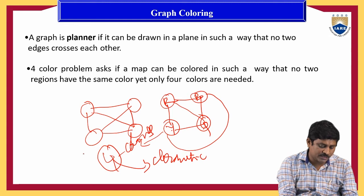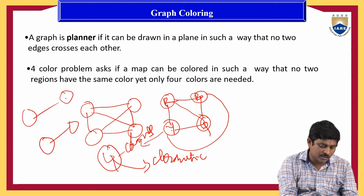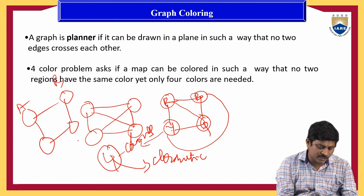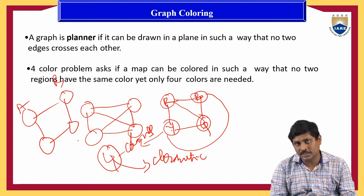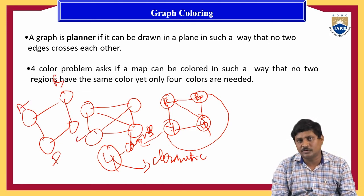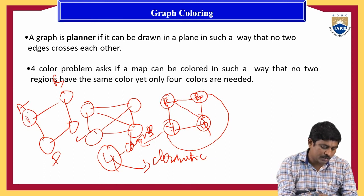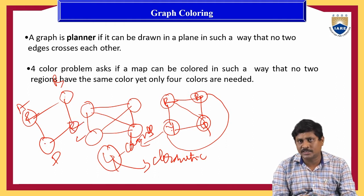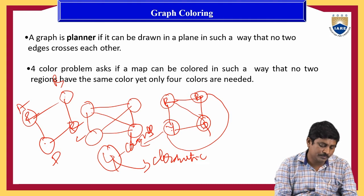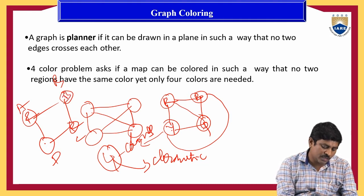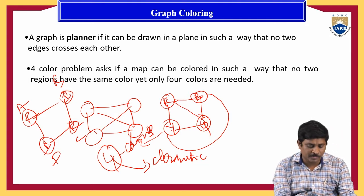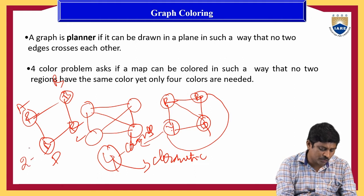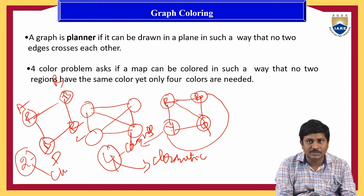Now consider a graph with vertices A, B, C, D. A is not adjacent to C, and B is not adjacent to D. We use red for A, and since C is not adjacent to A, we use red for C as well. We use blue for B and also blue for D. With a minimum of two colors we fill this graph, so the chromatic number is two.